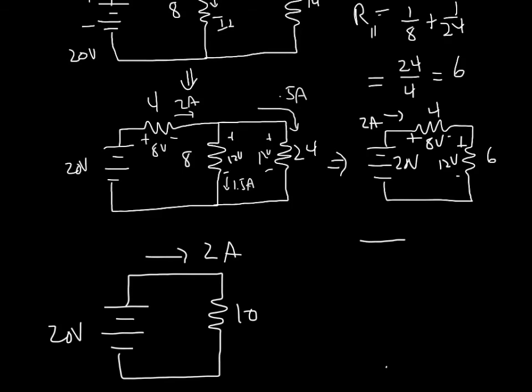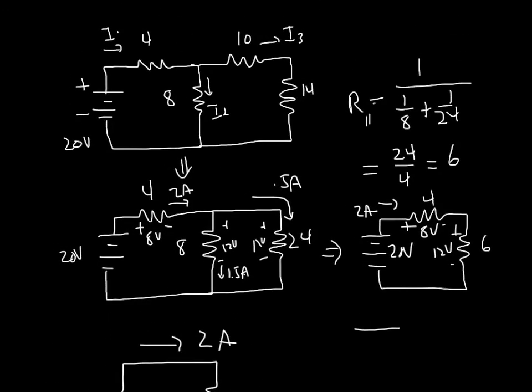And that leaves me back to my original circuit. I now know everything about this, because I know that I1 is 2 amps, I2 is 1.5 amps, the voltage drop across the 8 ohm resistance has to be 12 volts, and the current down the side branch, I3, is half an amp.